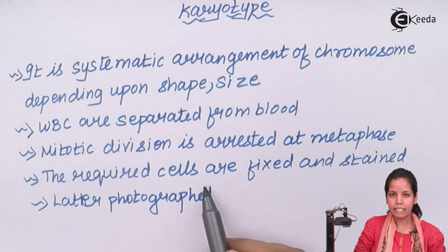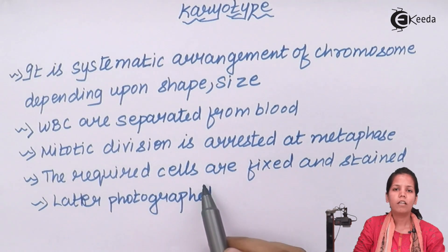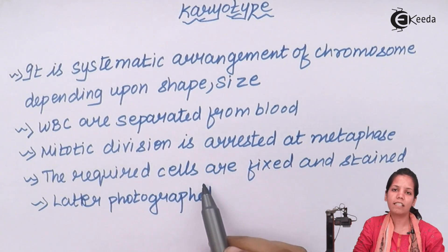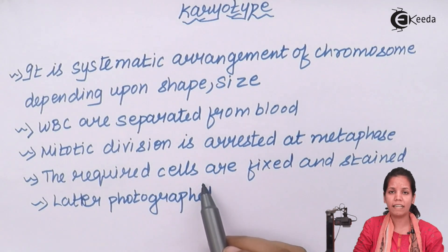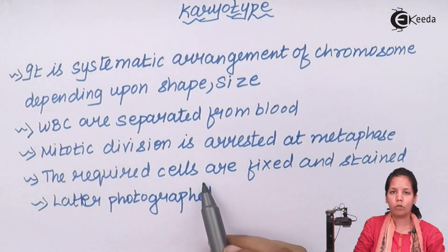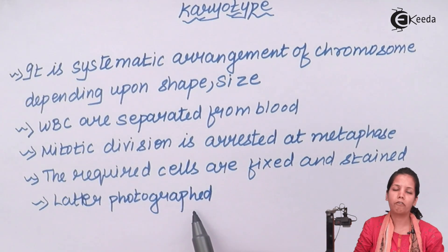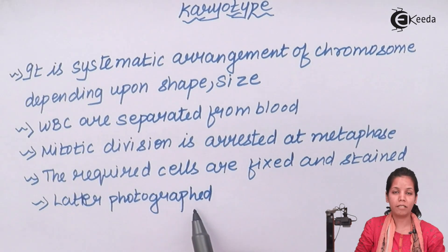The required cells are then fixed and stained using different chromosomal stains, which stain certain regions of the chromosomes. Once that is done, the sample is observed under an electron microscope, and lastly, if required, a photograph is taken for future references.